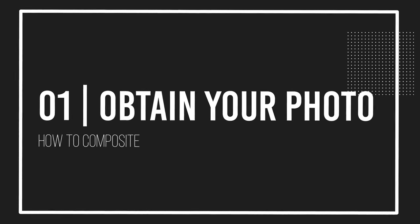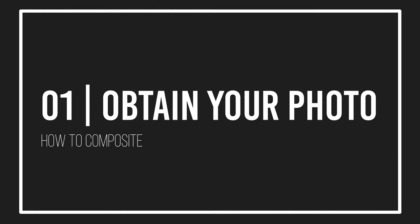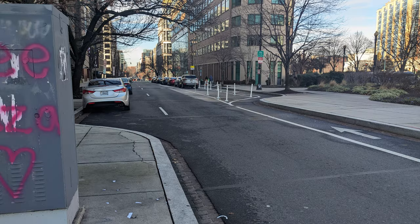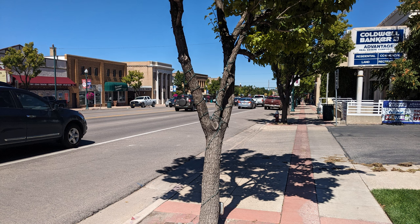The first step is acquiring the perfect photo. The foundation of any great composite is the base photo, so let's explore the options. First is street side photography — venture out with your camera ensuring you adhere to local regulations and safety guidelines. Look for angles that offer a comprehensive view of your project area.